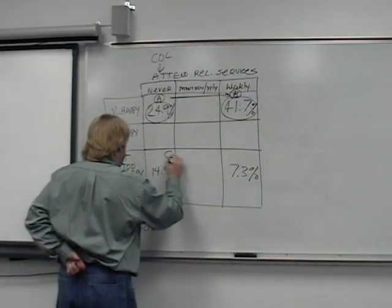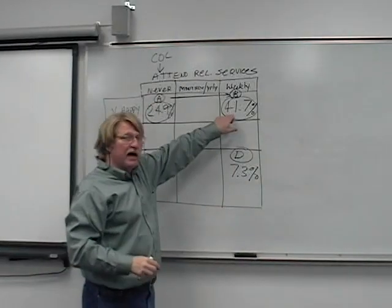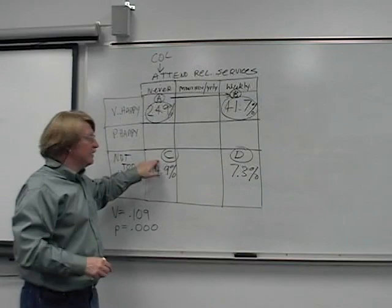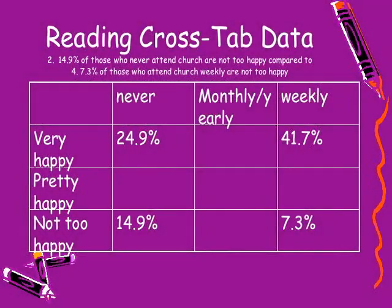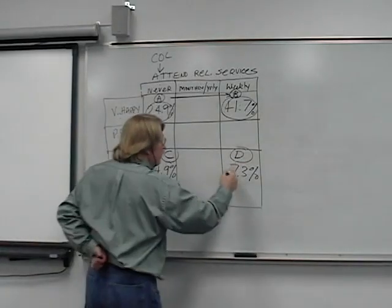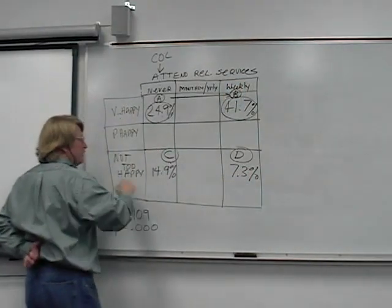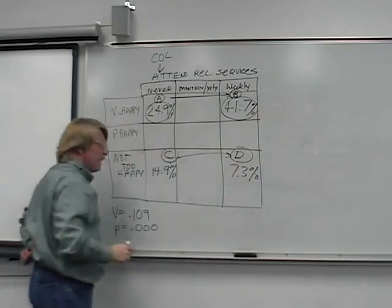We now have cell C to compare to cell D. If this was low and this was high for it to be consistent, this cell needs to be high and this cell needs to be low and look what we have. Let's read this data. 14.9% of the people who never attend church or synagogue or mosque say they're not too happy, while 7.3%, a smaller percent, who attend church weekly say they're not too happy. Does cell C to D support our data? Absolutely.